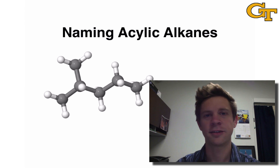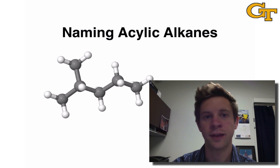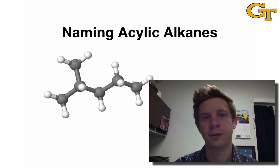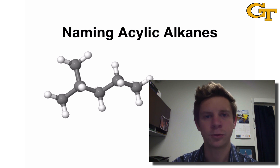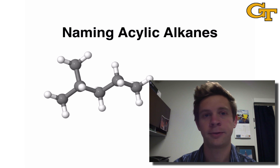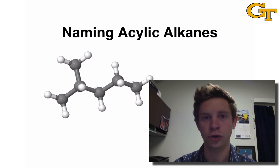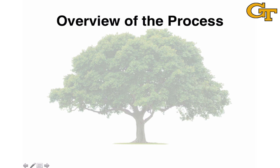In this video, we're going to discuss the IUPAC convention for naming acyclic alkanes. The goal is to generate a name from a chemical structure that uniquely identifies the compound in question. Keep in mind as we go through the rules and conventions what the purpose of each step is — this will help you remember the steps when it comes time to apply the process to a new molecule. The process for naming alkanes proceeds in three general steps.